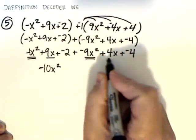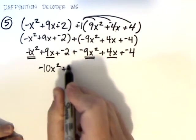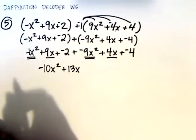Next, I'm going to combine the x's. I have a 9x there and a 4x there. So, that gives me 13x, 9 plus 4.